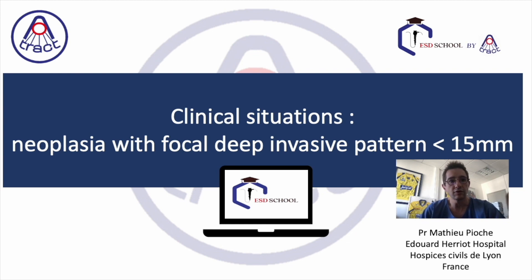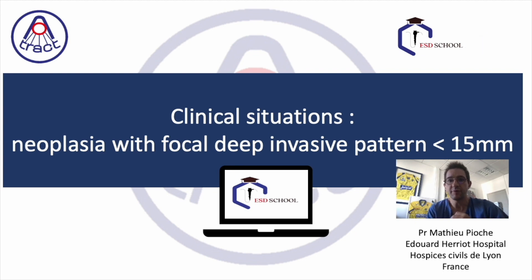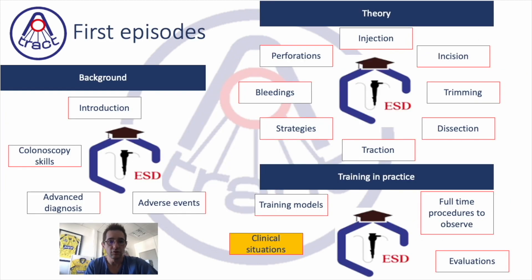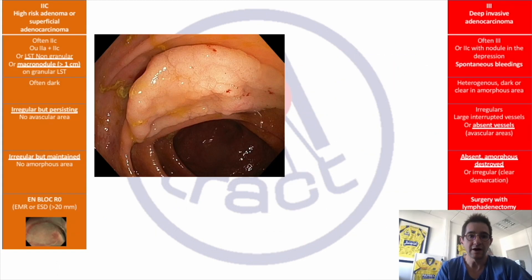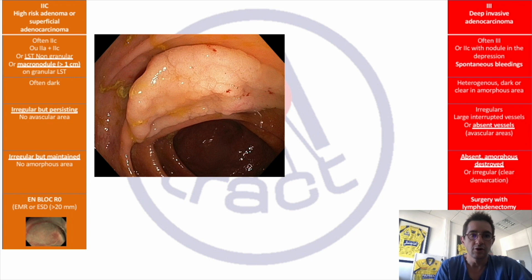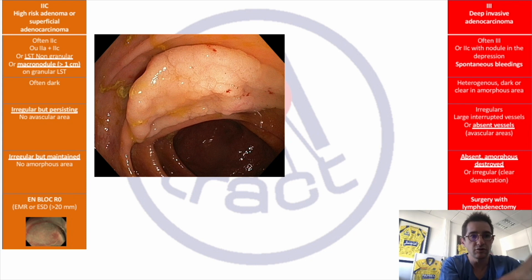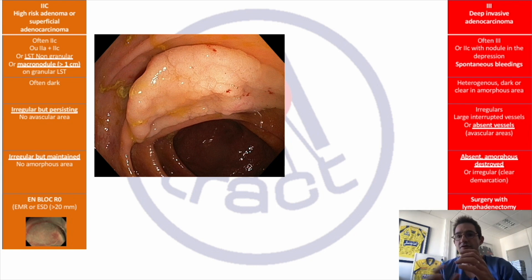Today we will discuss one particular clinical situation: ESD for neoplastic lesions that harbor a small area of deep invasive pattern — CUDO5N or Sano3B — but in a very tiny area. This is part of the ESD School for particular clinical situations. ESD is one of the good options to remove lesions harboring risk factors of T1 cancer, like non-granular LST or micro nodules over 1 cm. We use the CONNECT classification 2C to define this orange area.